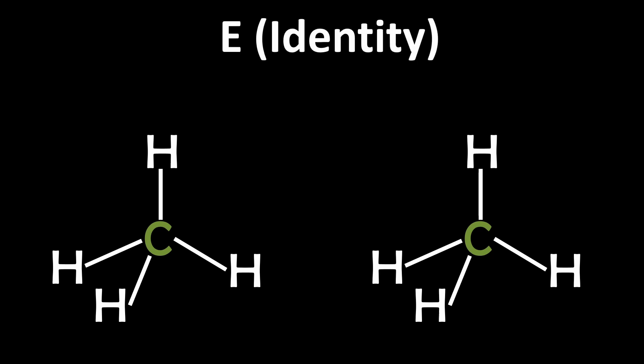Identity. Take methane. The identity operation simply means doing nothing. You leave the molecule exactly as it is, and of course it looks the same. Every molecule has this operation by default, which is why every molecule has at least one symmetry operation. Even if this is very simple and seems stupid, it's important later on.